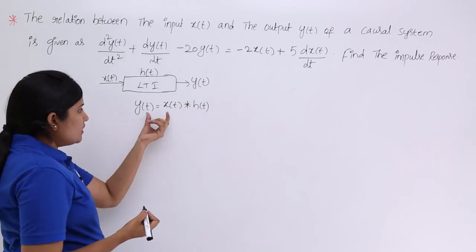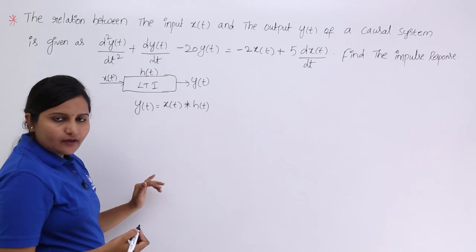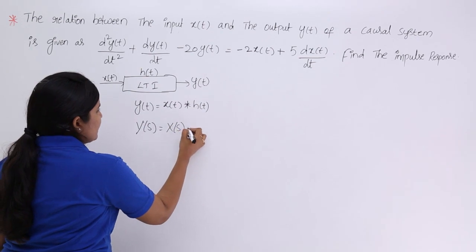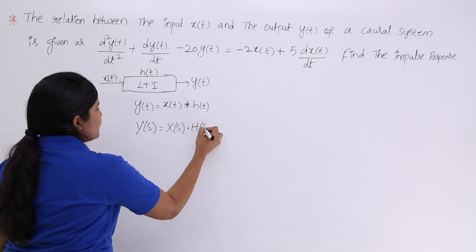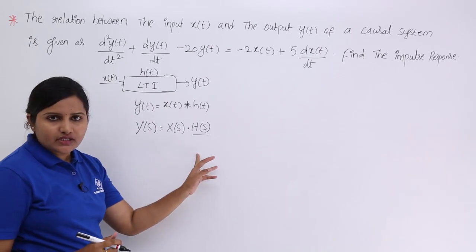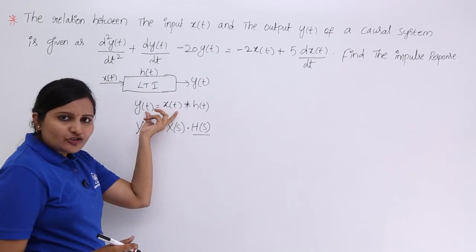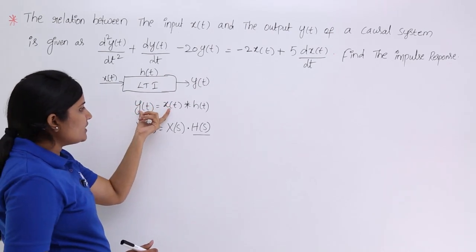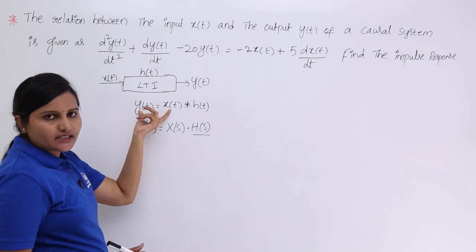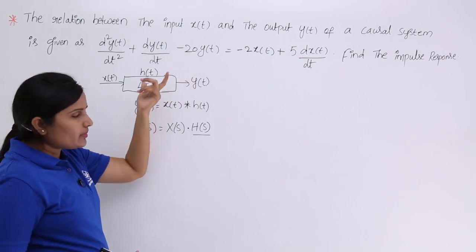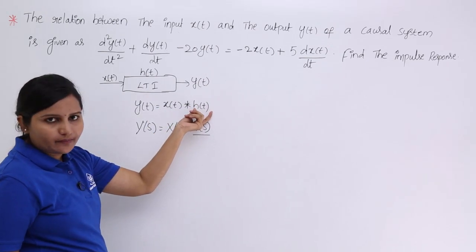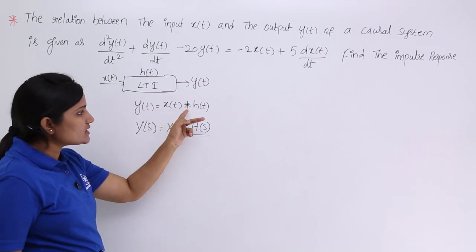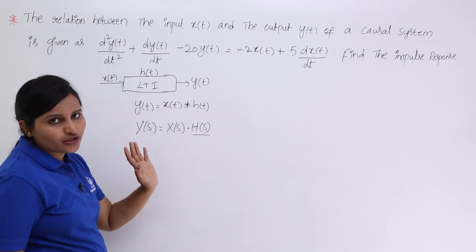The same equation can be written in the frequency domain as Y(s) = X(s)·H(s), where H(s) is the transfer function of the system. Convolution in the time domain leads to multiplication in the frequency domain. The relation of y(t) and x(t) is given by the differential equation, but it is difficult to separate the convolution equation to get h(t) directly.